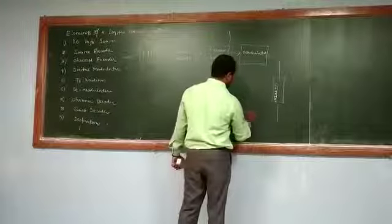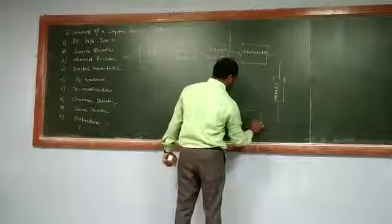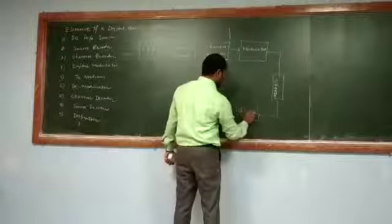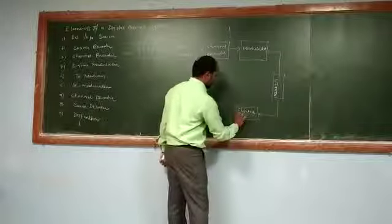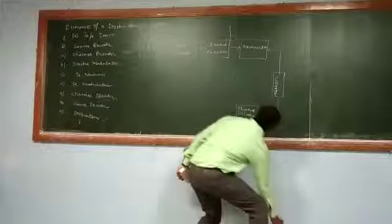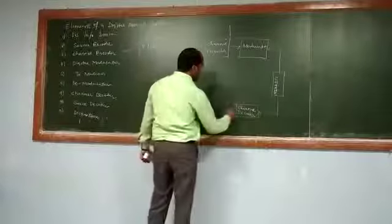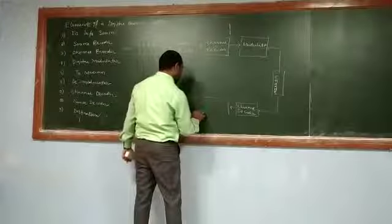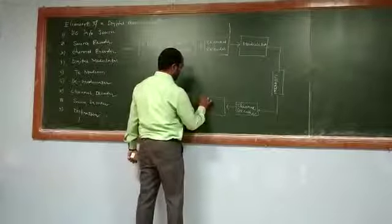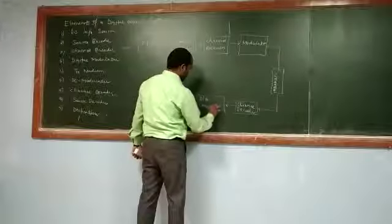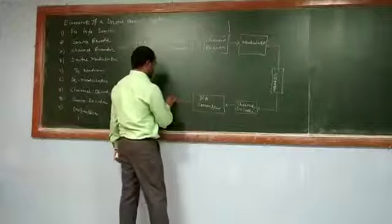And the receiving side, the first component is your channel decoder, and the second component is the analog to digital converter. And the last one is your destination.